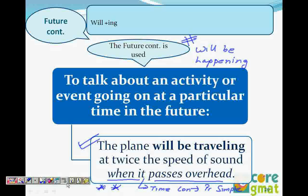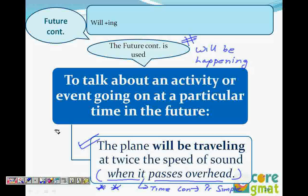Remember that rule — with time conjunctions, it's always present simple. So when it passes overhead — because it relates to time, it will be in present simple. But when we talk about an event that will be ongoing in the future, we always use 'will be plus ING.' So to summarize: present continuous is 'is plus ING' — something ongoing now; past continuous is 'was plus ING' — something ongoing at a particular point in the past; future continuous is 'will be plus ING' — something ongoing at a particular point in the future.